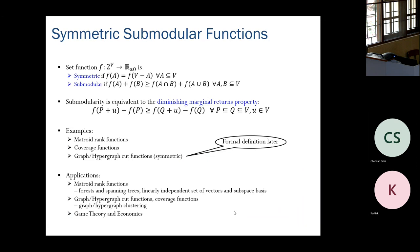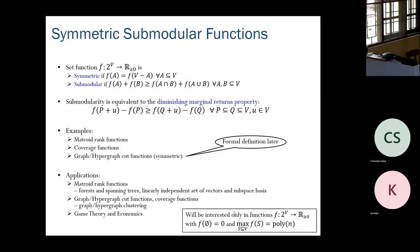Throughout this talk we will only be interested in functions that take non-negative values, with the function value on the empty set assumed to be zero. For simplicity, I will also assume that the maximum function value is polynomially bounded in n, the size of the ground set V, since we are interested in representation and don't want these function values to be too large.